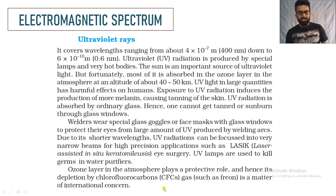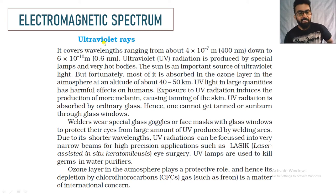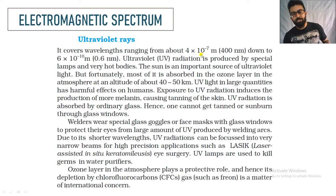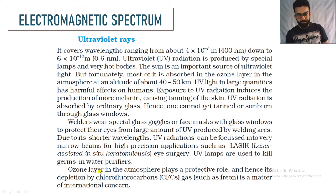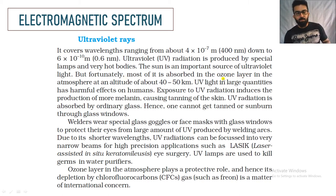Next are ultraviolet rays. They cover wavelengths ranging from 4×10⁻⁷ meters (400 nanometers) down to 6×10⁻¹⁰ meter (0.6 nanometers). Most special lamps and hot bodies produce ultraviolet rays. The Sun also emits ultraviolet rays, but most of it is absorbed by the ozone layer.